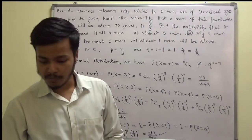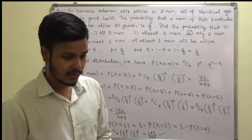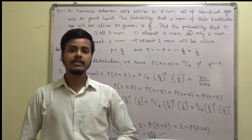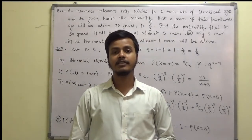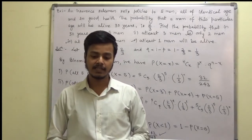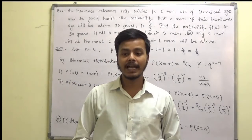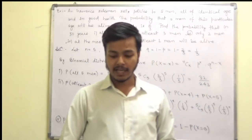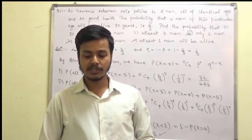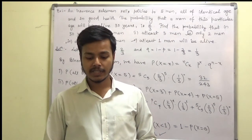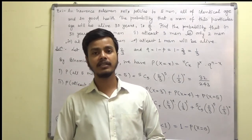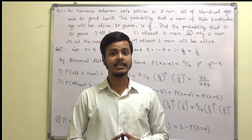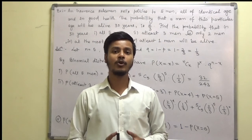I would like to take one more problem related to this — the probability that an entering college student will graduate is 0.4, and we have to determine out of five students: none will graduate, one will graduate, or at least one will graduate. We shall take that up in the live sessions. Thank you for watching this learning video — keep learning and keep enjoying mathematics!